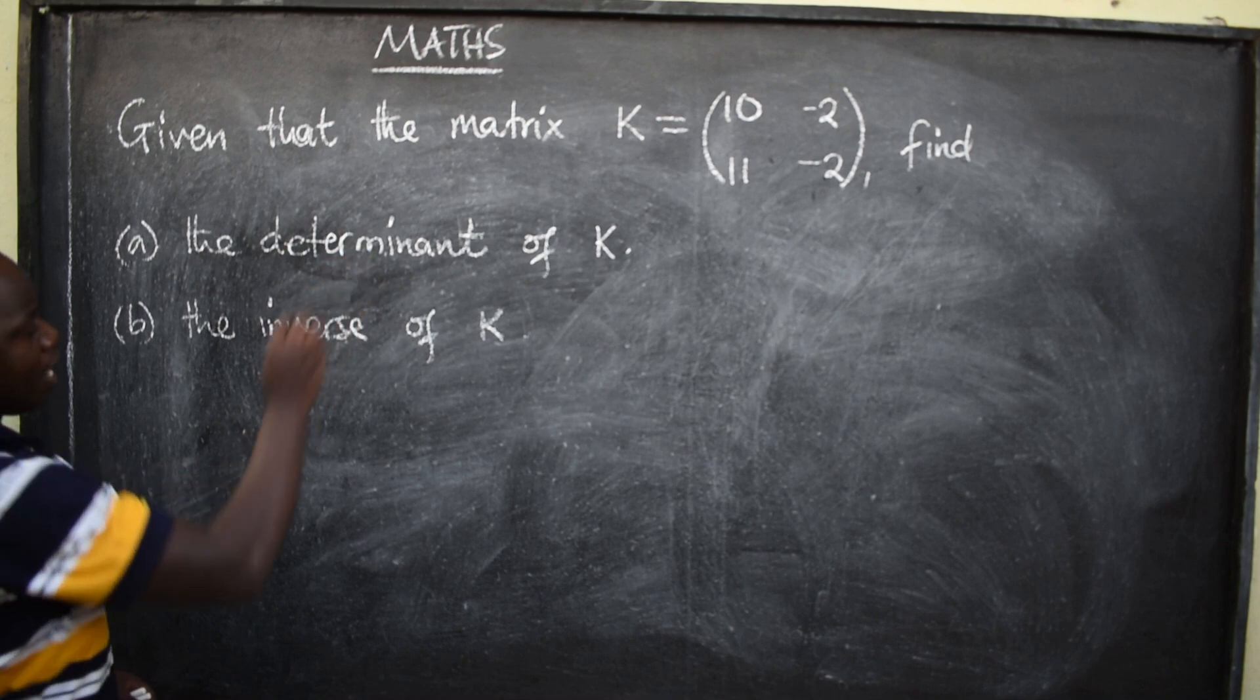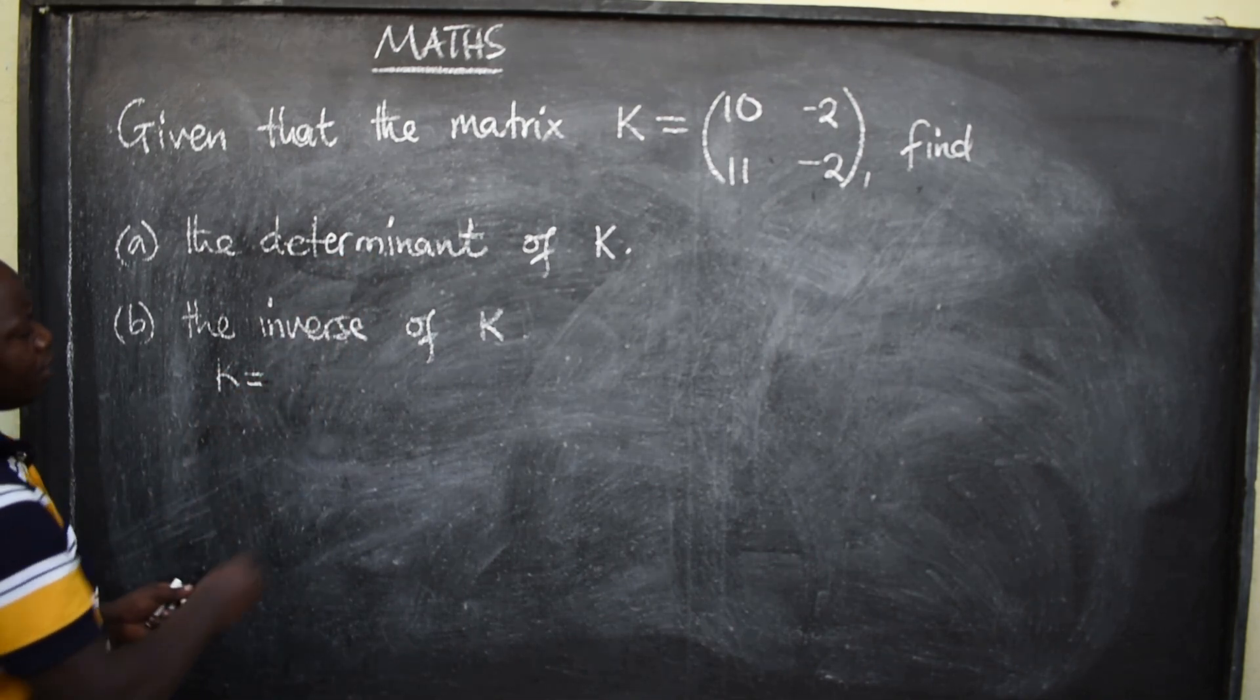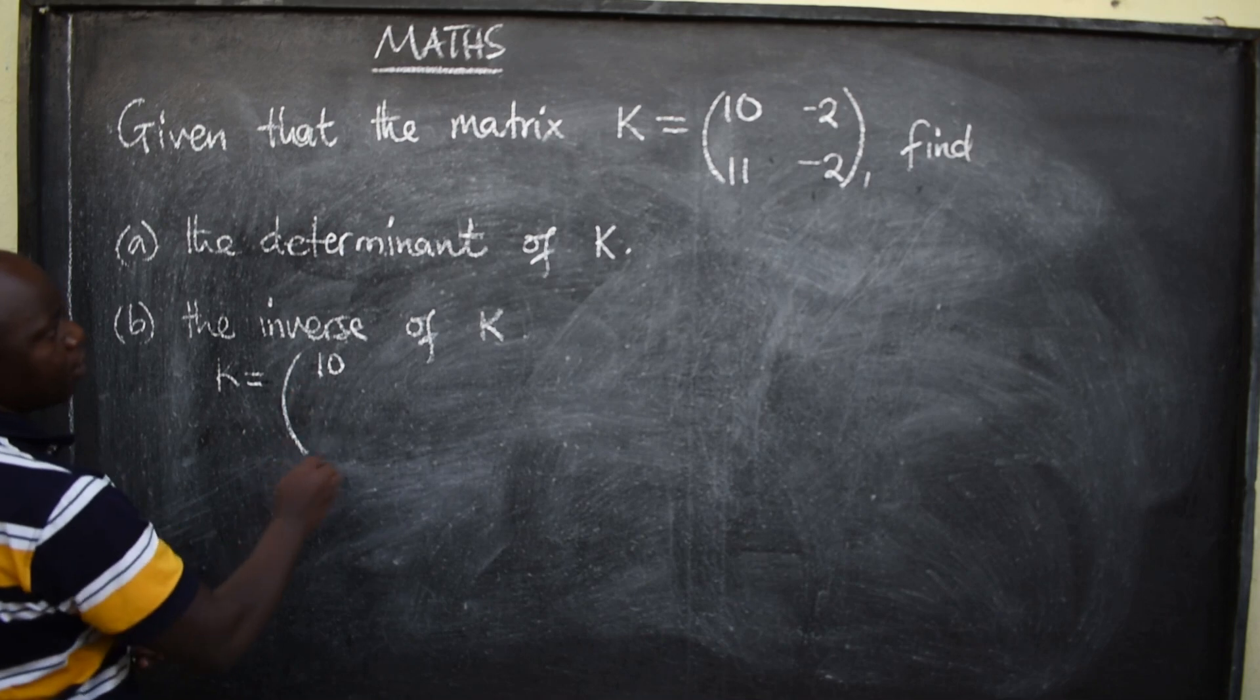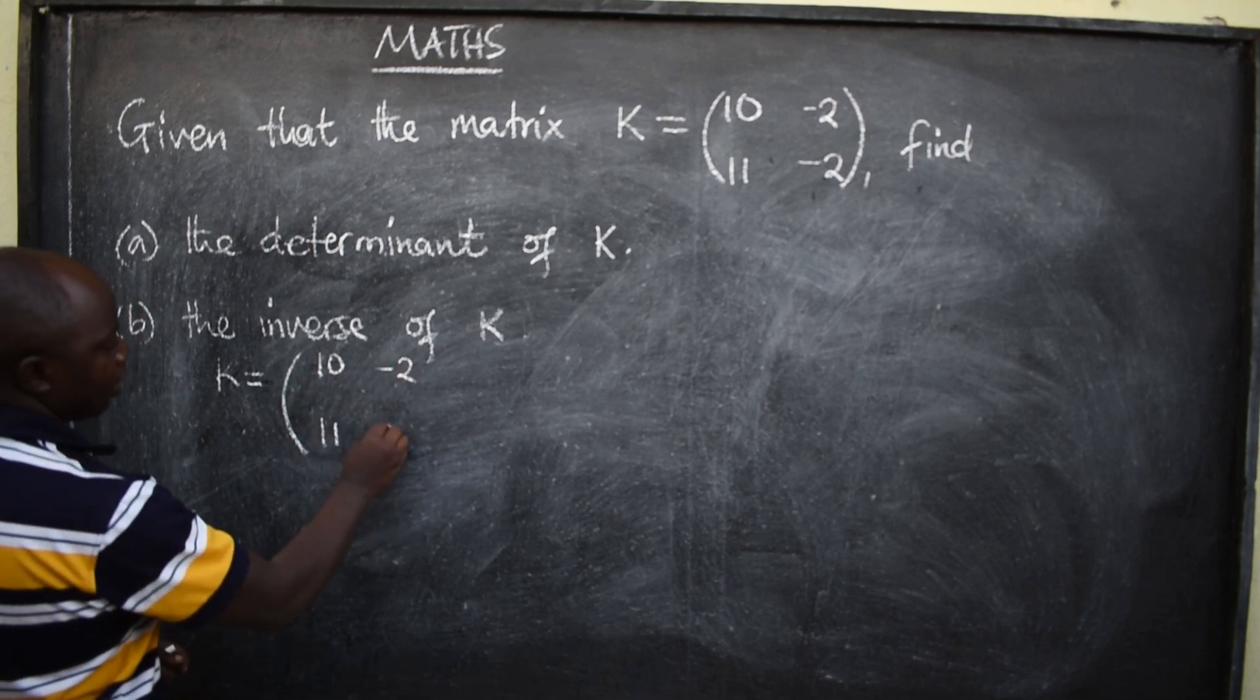So, matrix K is given by 10, negative 2, 11, and negative 2.